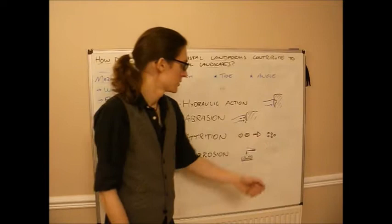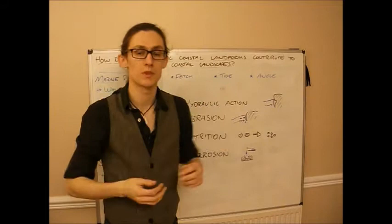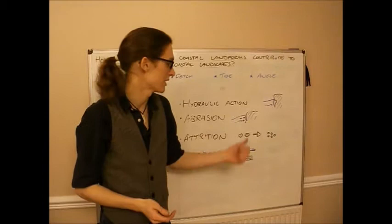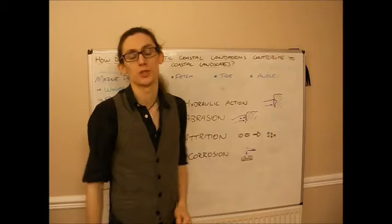Attrition is where big bits of rock grind against each other to make small bits of rock. So it's not strictly eroding the cliff face or the coastline itself, but it's all linking into the same process and breaking it down as it goes. Again, unconsolidated rocks are greatly at risk of this.